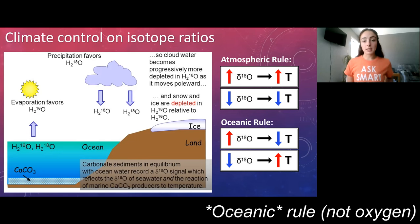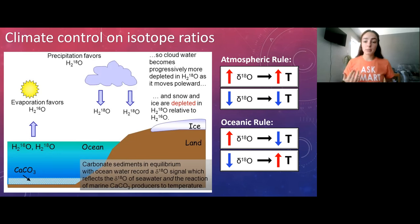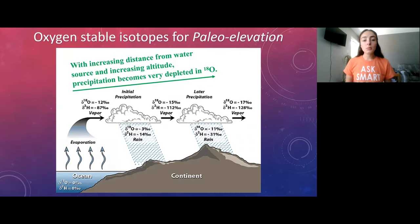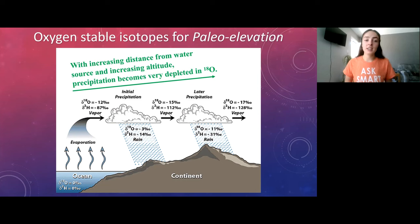The oxygen rule is just the opposite of the atmospheric rule because of the interplay between the ocean and the atmosphere — whatever goes into the atmosphere comes out of the ocean. This is how oxygen isotopes move around, and it all has to do with the difference in mass when there are more or fewer neutrons in the nucleus.